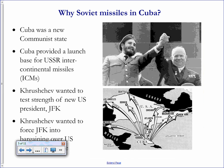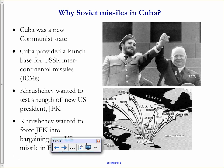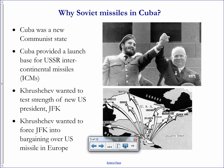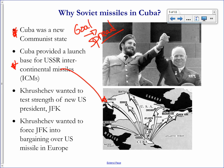Why would the Soviet Union do this? Cold War competition — who can have the most power and influence. Cuba is a communist nation, so anything the Soviet Union could do to help Cuba, it would, because the goal of communism is to spread around the world. Also, if missiles are placed in Cuba, you can see from the map that all major cities including Washington D.C. would be within range of most of their missiles.